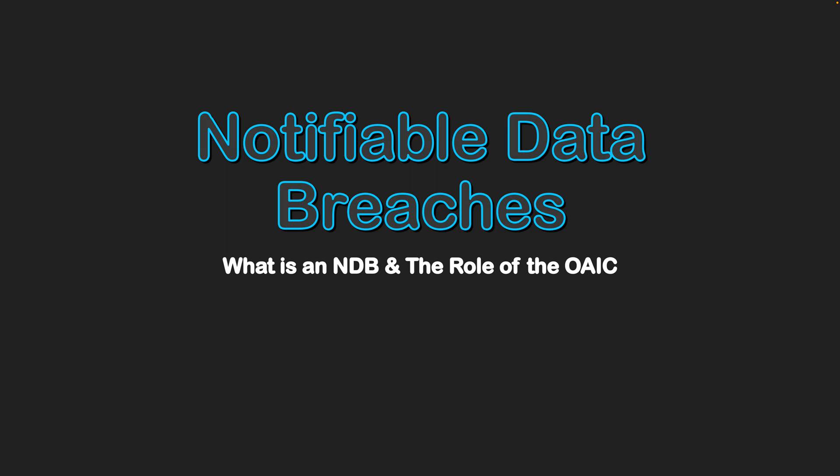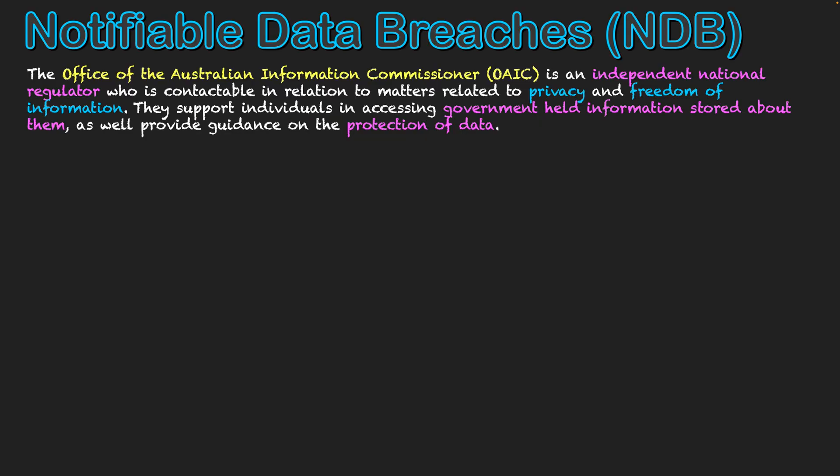Notifiable data breaches — what is an NDB and the role of the OAIC? The Office of the Australian Information Commissioner, the OAIC, is an independent national regulator who is contactable in relation to matters related to privacy and freedom of information. They support individuals in accessing government-held information stored about them, as well as provide guidance on the protection of data.